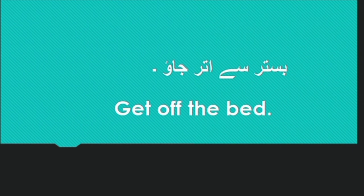बिस्तर से उतर जाओ — Get off the bed. For getting on the bed, use 'get on'; for getting off, use 'get off'. By practicing these small sentences on a daily basis, you can comfortably learn to speak English.